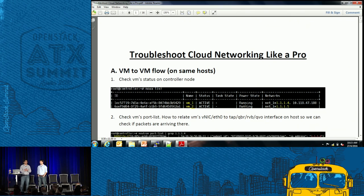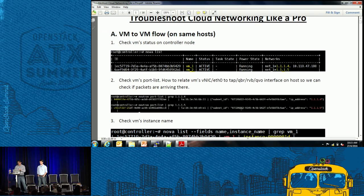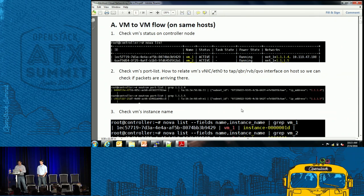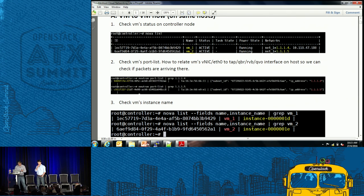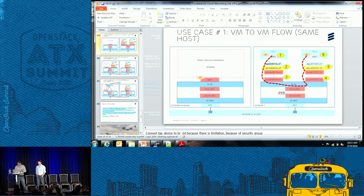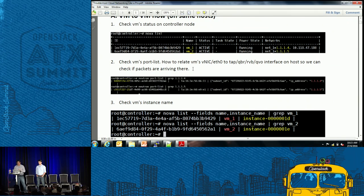The first scenario is VM to VM flow on the same host. First you need to check on the controller node — do nova list to get the VM IP. To get the port list of that VM, do neutron port-list and grep for the IP address. The important thing is to take the first 11 characters from that port ID, because those 11 characters will be used for your TAP interfaces, QBR interfaces, and QVO interfaces. You'll see that the TAP interface, QBR, QVO all use those same 11 characters from the neutron port ID.